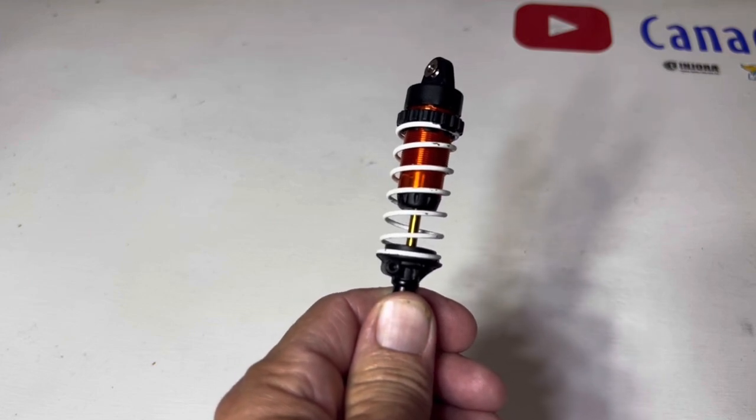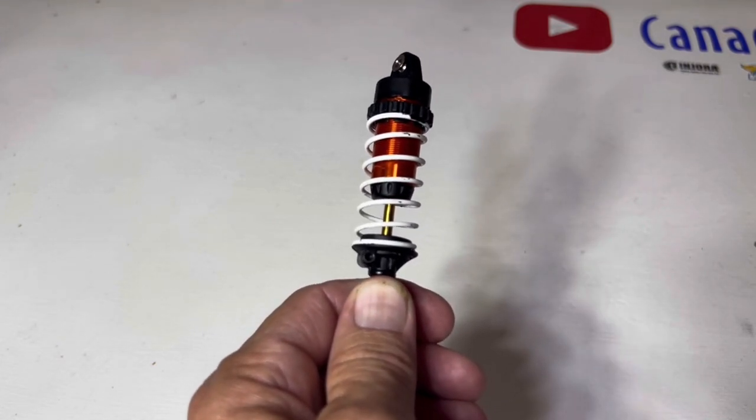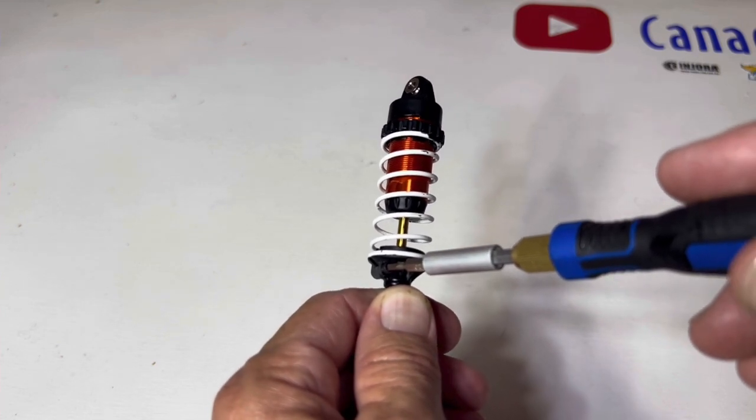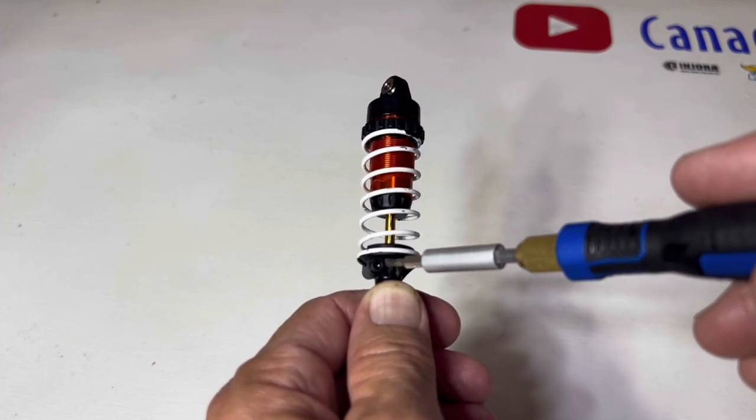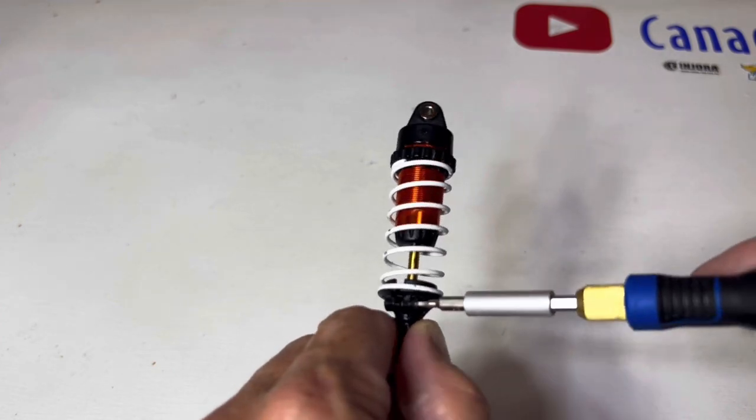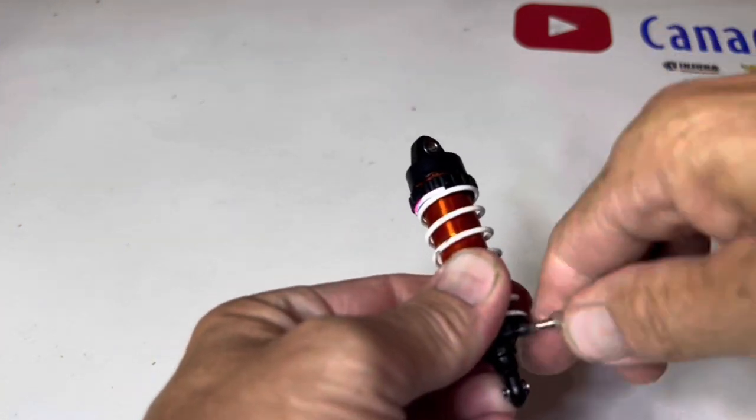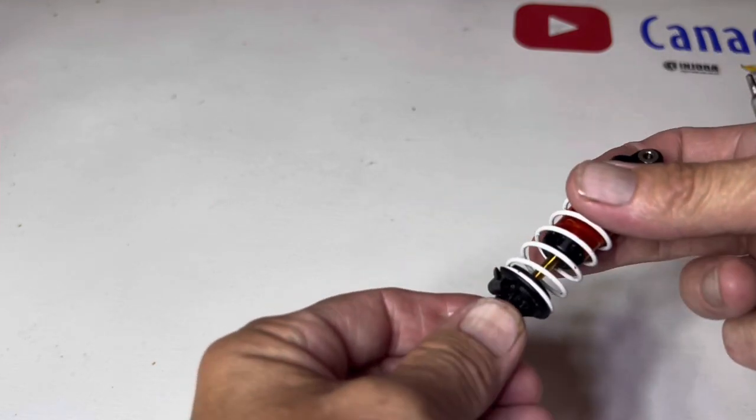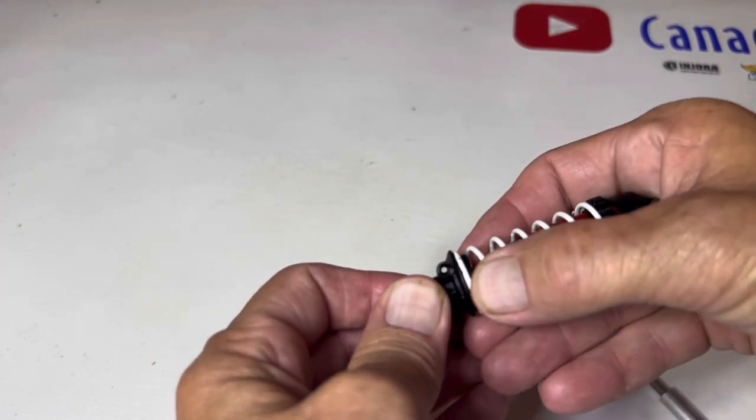So here you go, here's your spring. First thing you're going to do, take this little hex bolt, unscrew it so we can get this spring retainer out of the way. Set that aside. Now you'll be able to pull up on your spring, hold nice and tight, and that little retainer you'll be able to kind of push up and pop it right off.